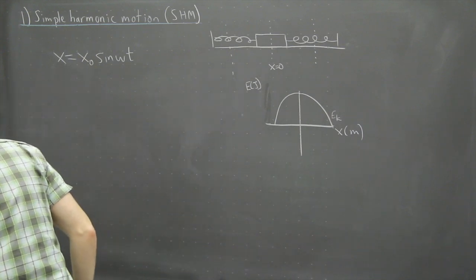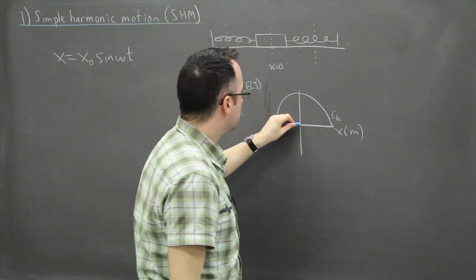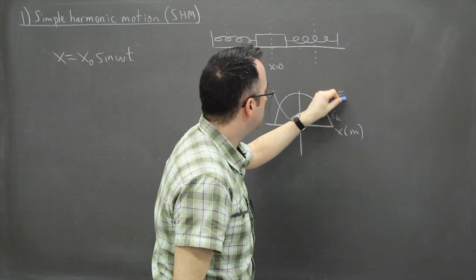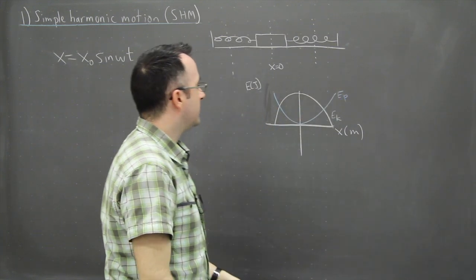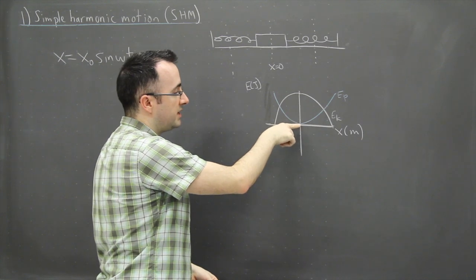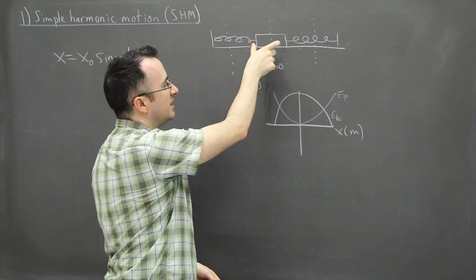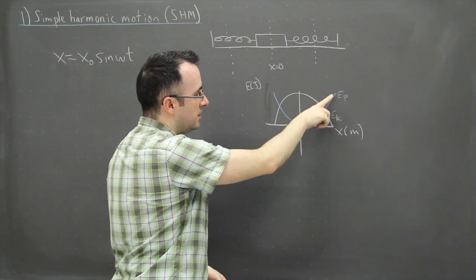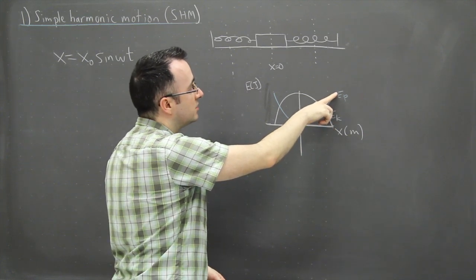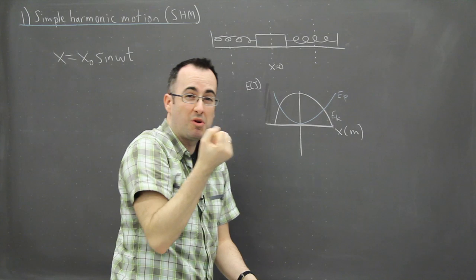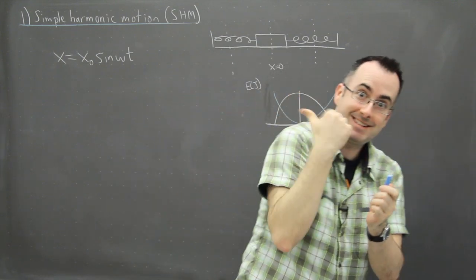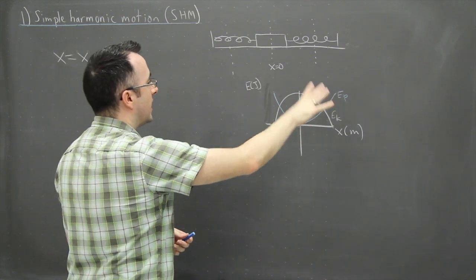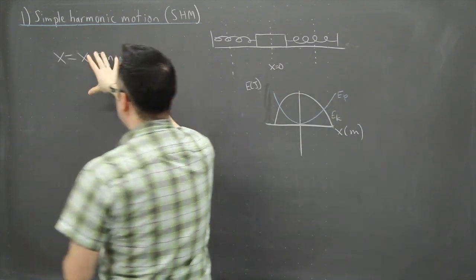We also have the potential energy, and it works in the opposite way. So the potential energy curve will be something like this — that's EP. That means at x equals zero it has no potential energy, because the springs aren't really pulling on it much. Whereas at maximum displacement, that's when it has maximum potential energy, because it has all the stored-up energy and it wants to go flying the other way.